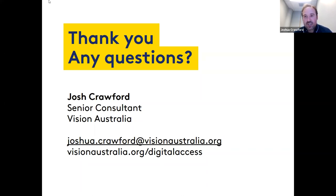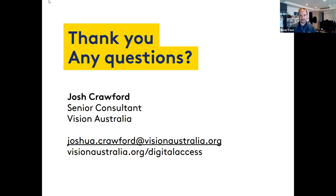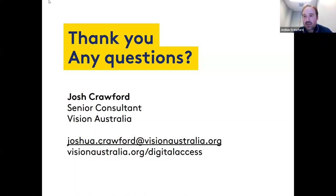On how wide a user group to consider for usability testing: it depends on budget. If your organization has never done usability testing with people with disabilities, start with a representative sample — perhaps two people who are blind, one person with dyslexia, one person with ADHD. On finding people with disabilities to test products: try to get a broad range of participants. The key is to start somewhere, get direct feedback, and build from there rather than making assumptions about your users' needs.